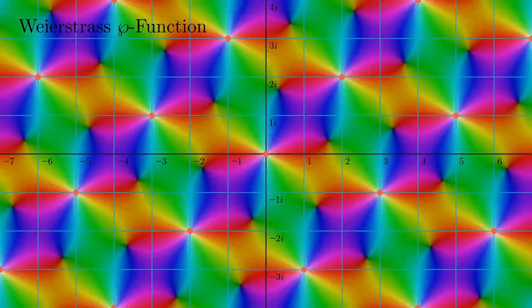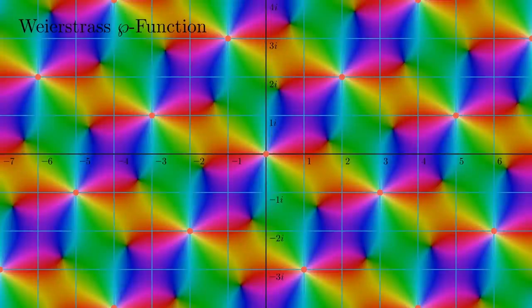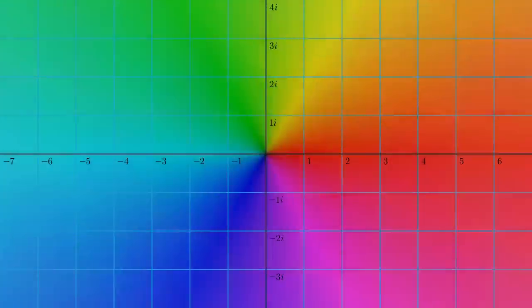When visualizing a complex function like this, we have a two-dimensional input and a two-dimensional output. To visualize the entire function, each point on the complex plane is color-coded according to its output. At zero, it's black and goes to white approaching infinity. The hue indicates the argument of the number. The connection between elliptic functions and modular forms is the key part of the proof of Fermat's Last Theorem.